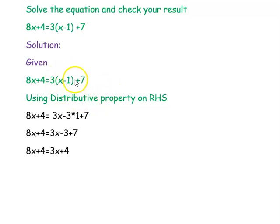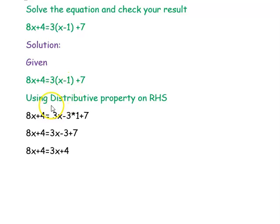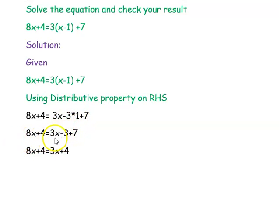We are using the distributive property on the right hand side. The left hand side is 8x plus 4. On the right hand side, distributing 3 to x and minus 1: you get 3 times x that is 3x, minus 3 into 1, plus 7. So 3 into 1 is 3: giving 8x plus 4 equal to 3x minus 3 plus 7.